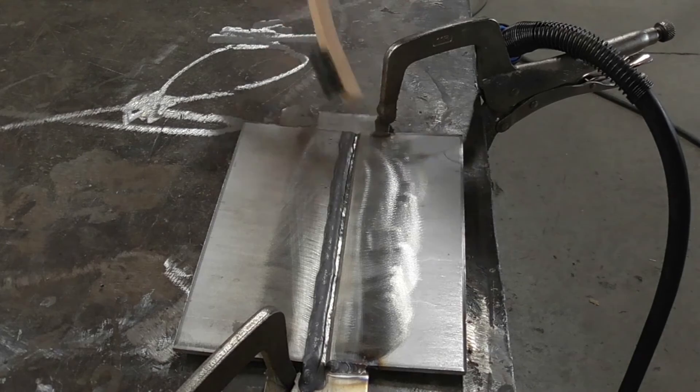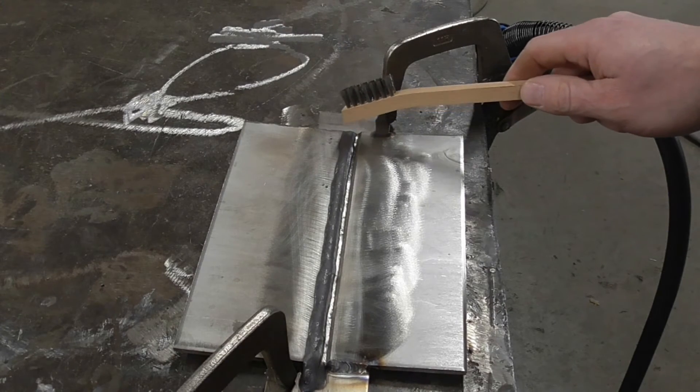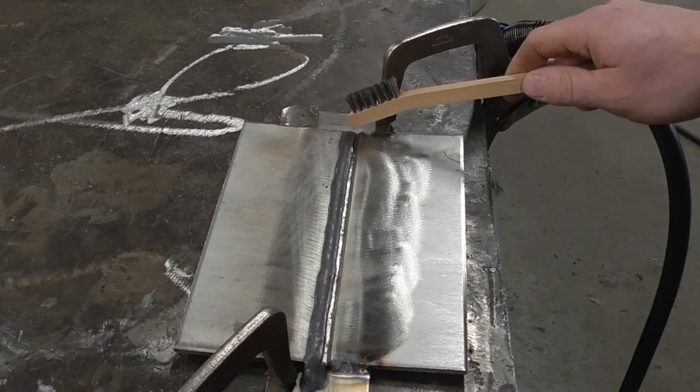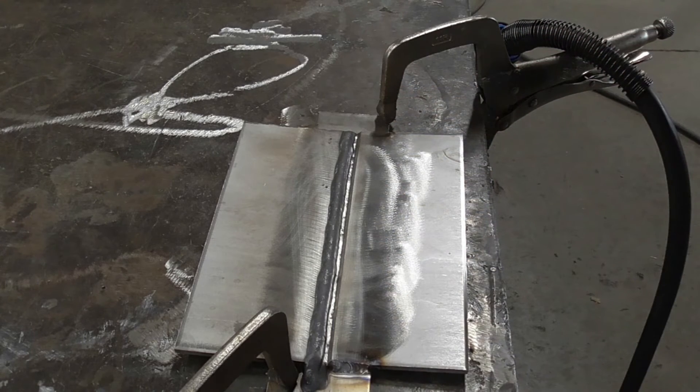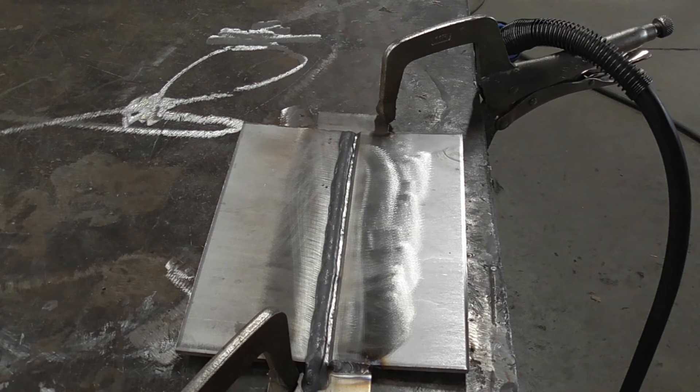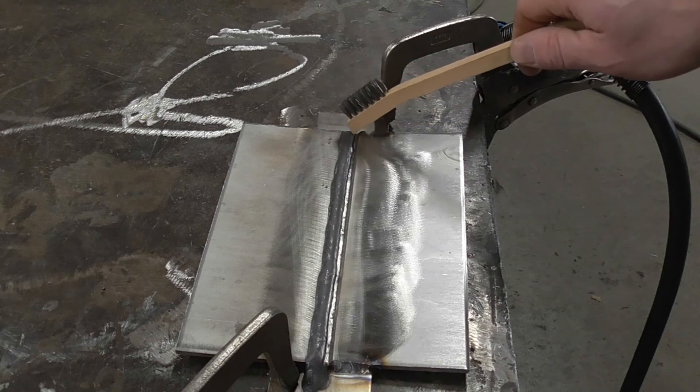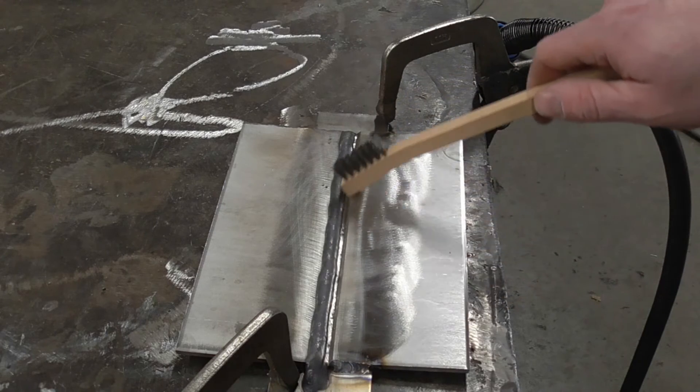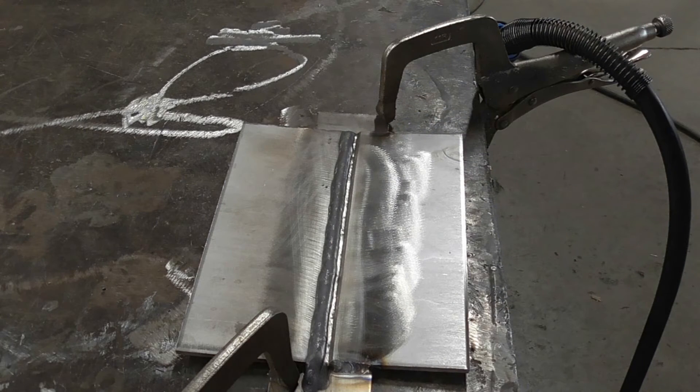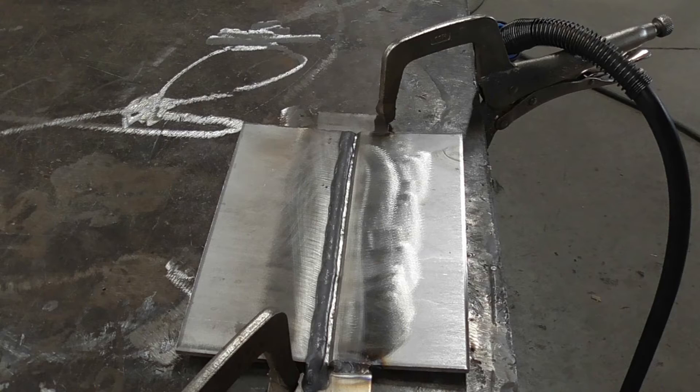Pass number two went in real nice. We have good joint fusion. And you can see the toe of this weld on the top edge has zero undercut. I don't see anything even close to having undercut. So we're going to move on to our third pass, and it's got this nice little groove. Fill that baby in, and then we'll get into some destructive testing just as long as it passes a visual test.